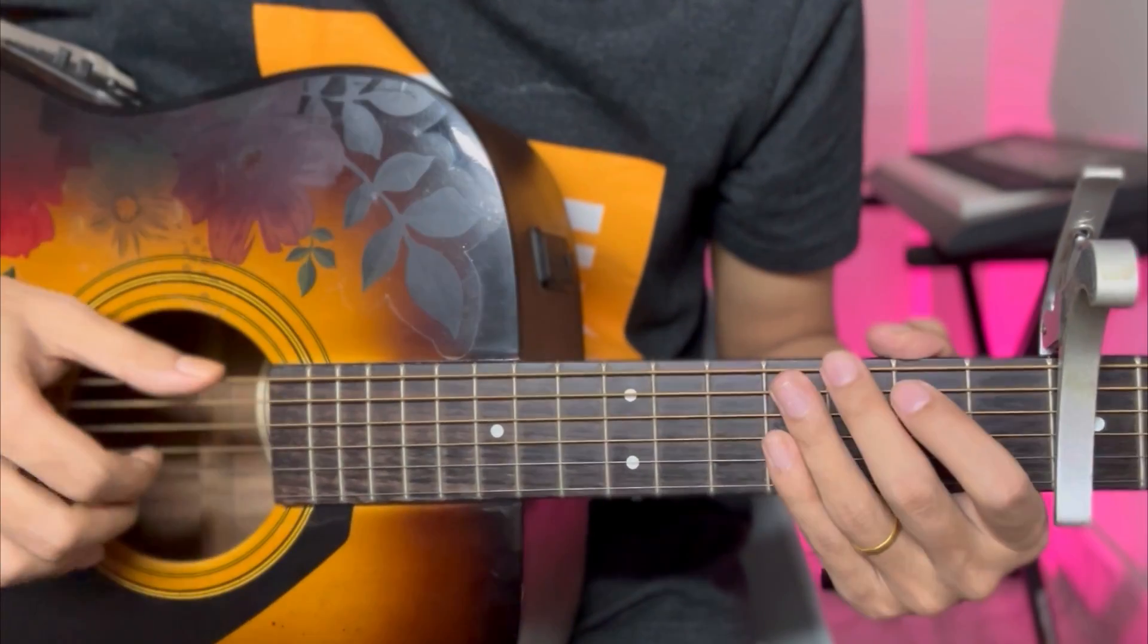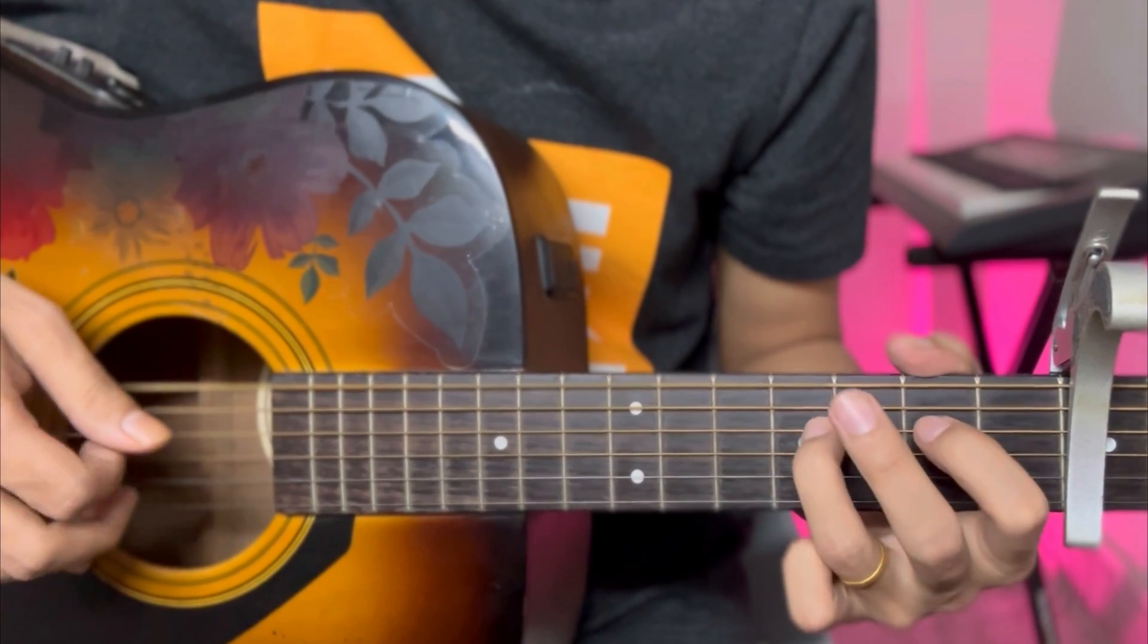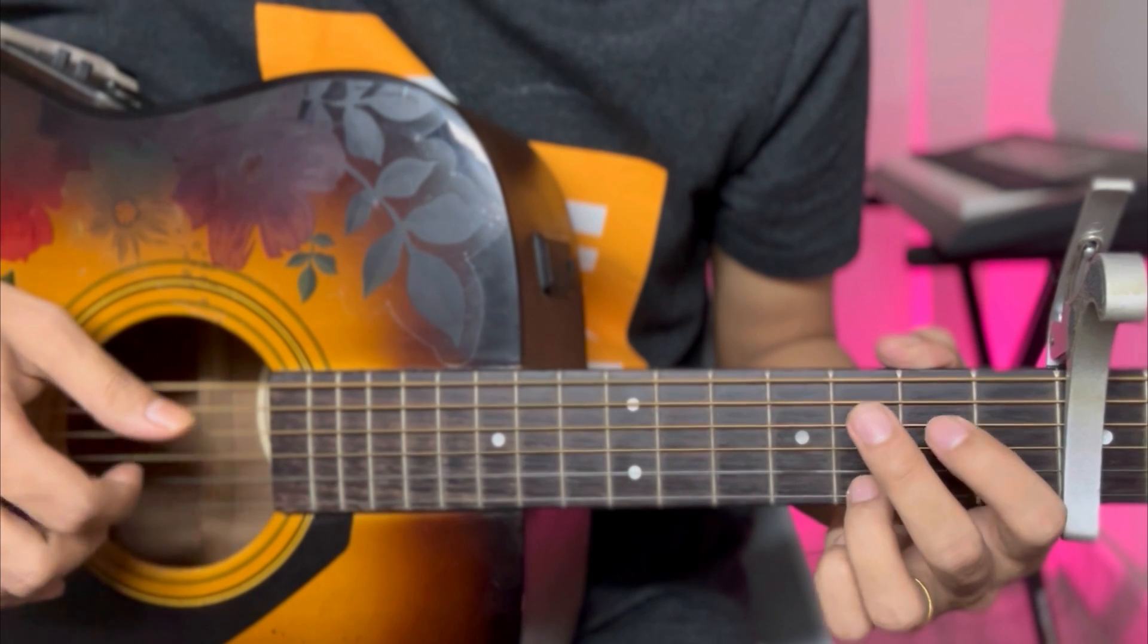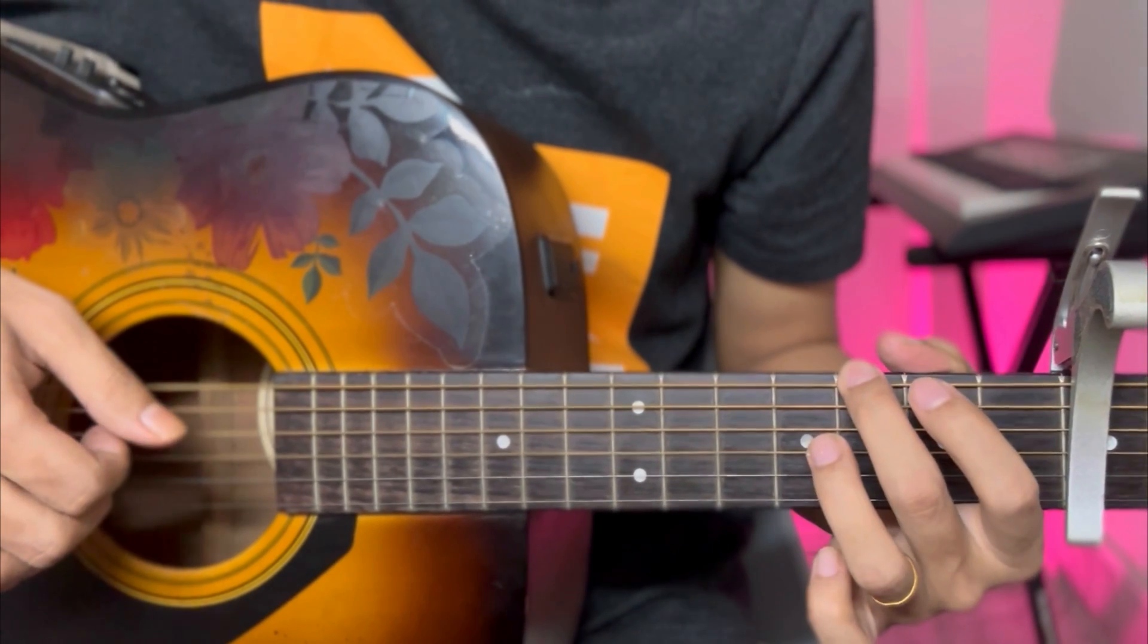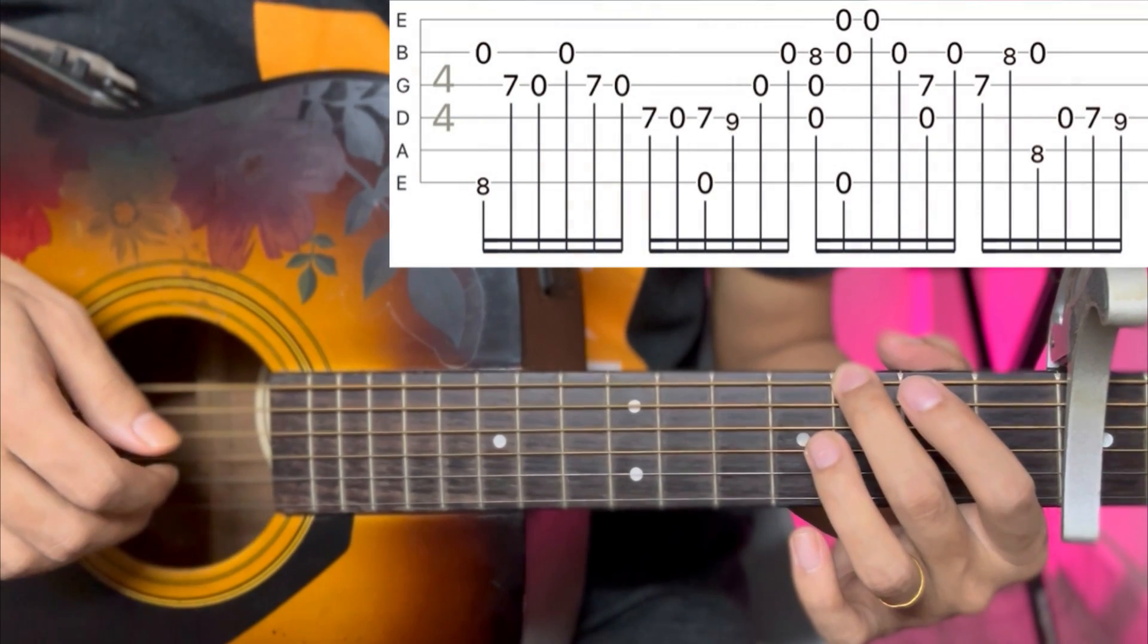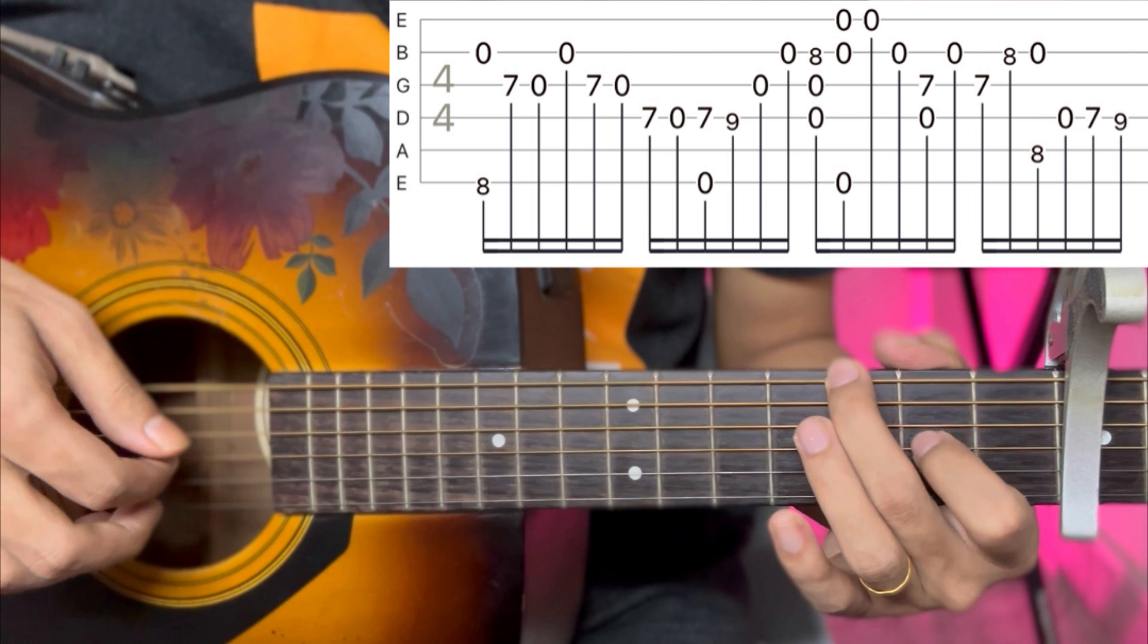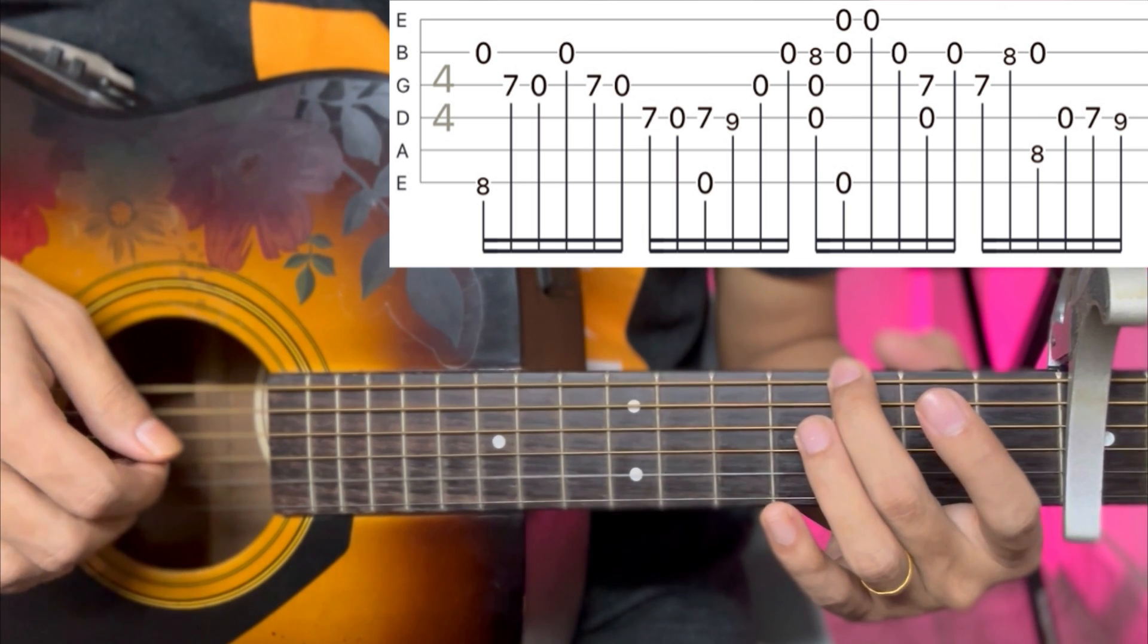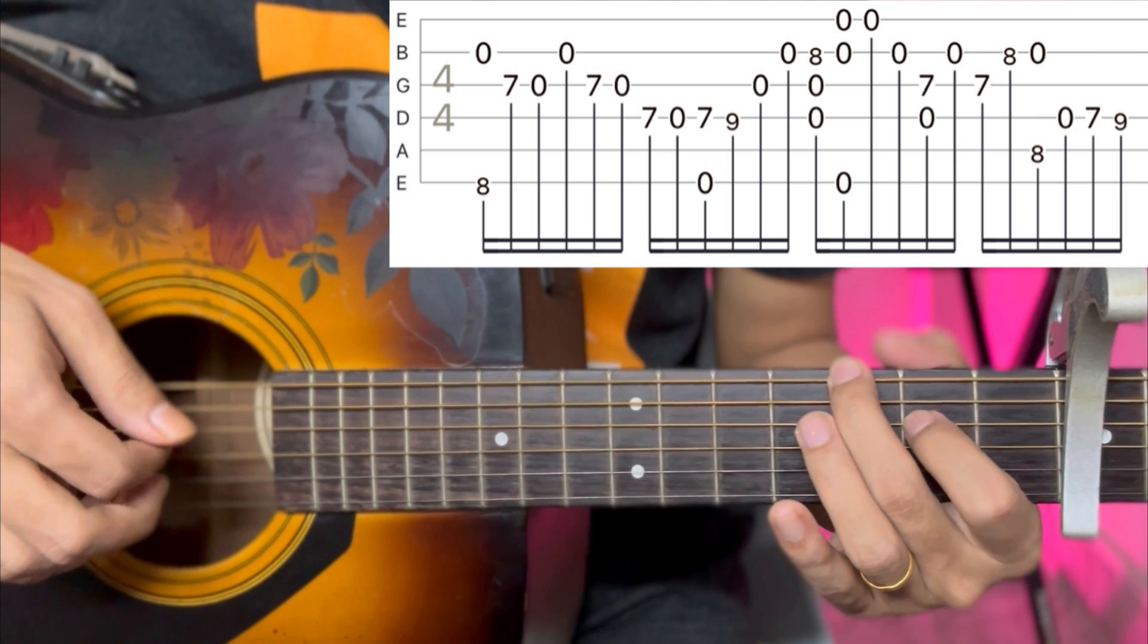We will listen like sixth string, second string, and legato to the third string seventh fret, second string seventh fret, fourth string seventh fret.